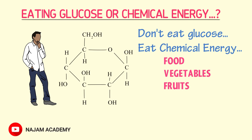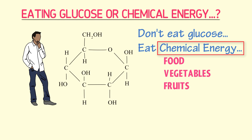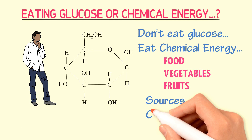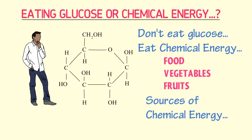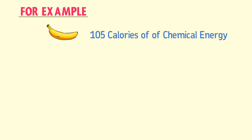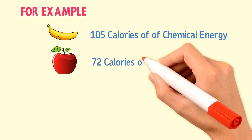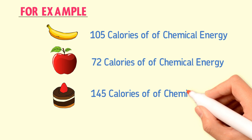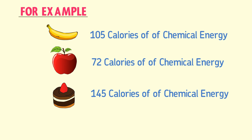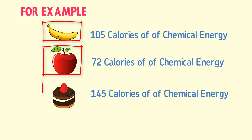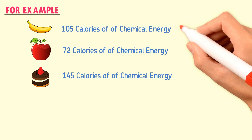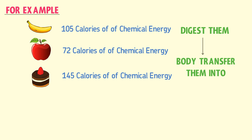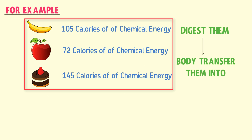Thus the food, vegetables, and fruits contain chemical energy — we need chemical energy. Looking at sources of chemical energy: the banana we eat contains 105 calories of chemical energy, the apple we eat contains 72 calories of chemical energy, and the ice cream we eat contains 145 calories of energy. When we digest them, our body transfers the chemical energy of the banana, the apple, and ice cream into other useful forms of energy.